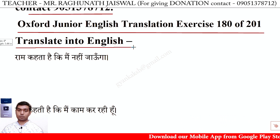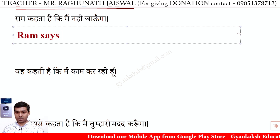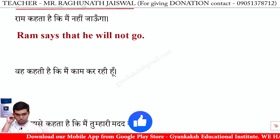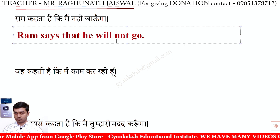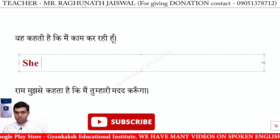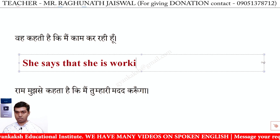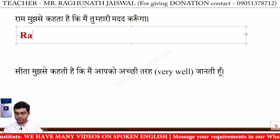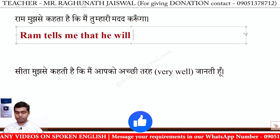Translate into English. राम कहता है कि मैं नहीं जाऊंगा — Ram says that he will not go. वह कहती है कि मैं काम कर रही हूँ — She says that she is working. राम मुझसे कहता है कि मैं तुम्हारी मदद करूंगा — Ram tells me that he will help me.